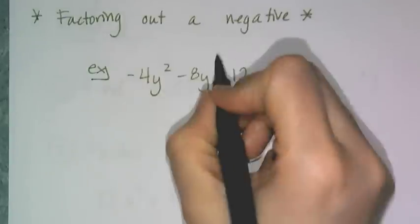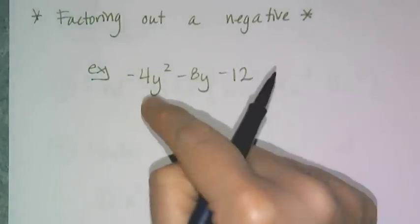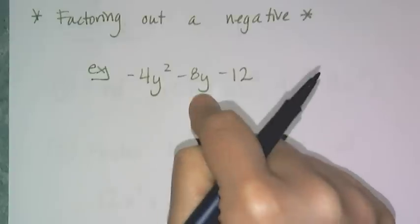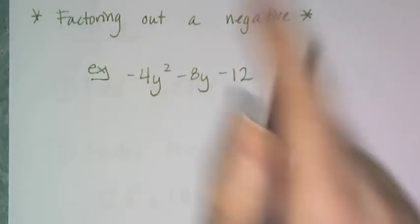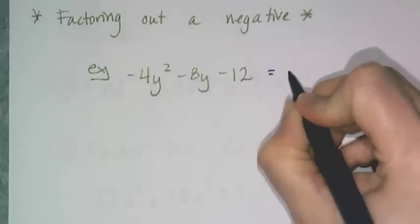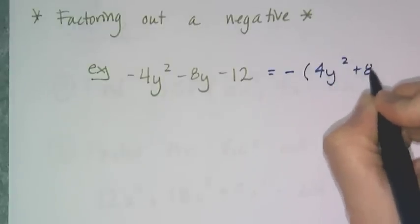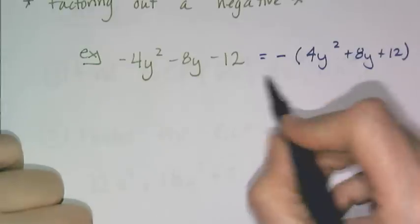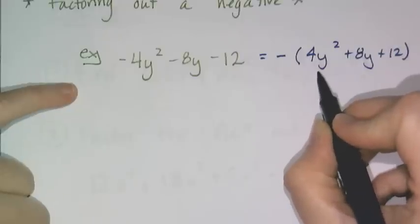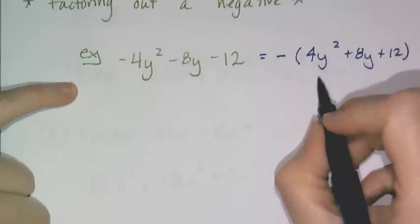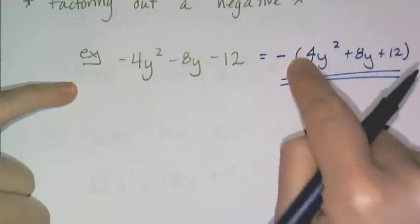One thing that knowing how to factor out the GCF can help you with is to change signs. So right now, I have a negative, and a negative, and a negative. Well, I can actually factor out a negative and change all of the signs. So if I wanted to, I can rewrite this as negative, and then 4y² + 8y + 12. Now, I didn't factor out the GCF. All I did was I factored out a negative, and you're going to see later on when we get to the more advanced factoring techniques that sometimes life is easier if you can factor out a negative and swap all the signs.